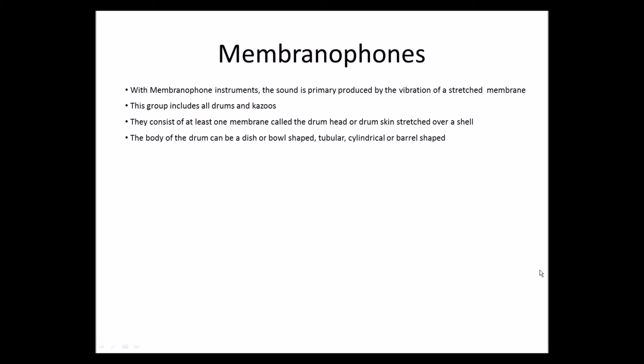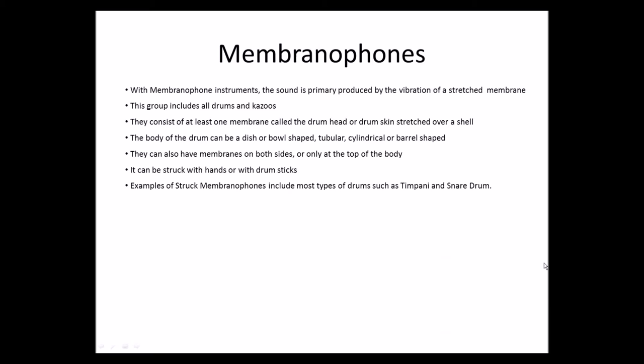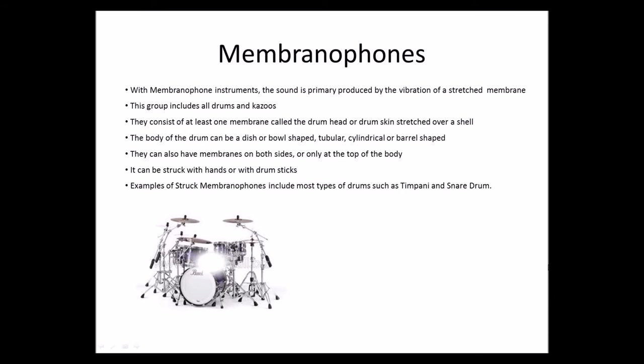The body of the drum can be dish or bowl shaped, tubular, cylindrical, or barrel shaped. They can also have membranes on both sides or only at the top of the body. It can be struck with hands or with drumsticks. Examples of struck membranophones include most types of drums, such as the timpani and the snare drum.